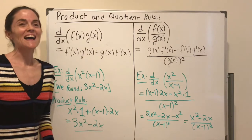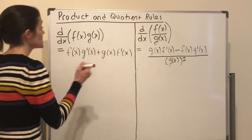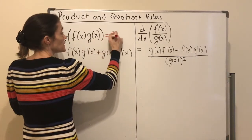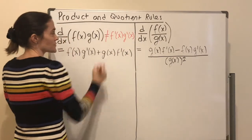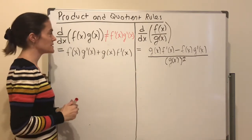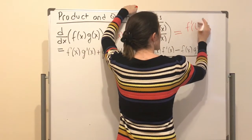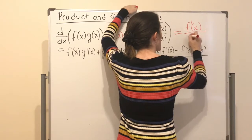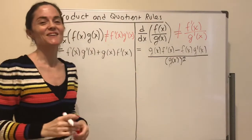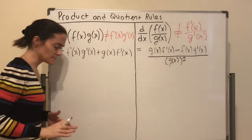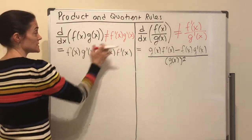Before more examples, let me mention what these rules are not. A common misconception is that the product rule would be: just differentiate the first times differentiate the second — this is not correct. And a common misconception for the quotient rule is: differentiate the numerator divided by differentiate the denominator — this is also not correct. Let's use elementary examples to see why.